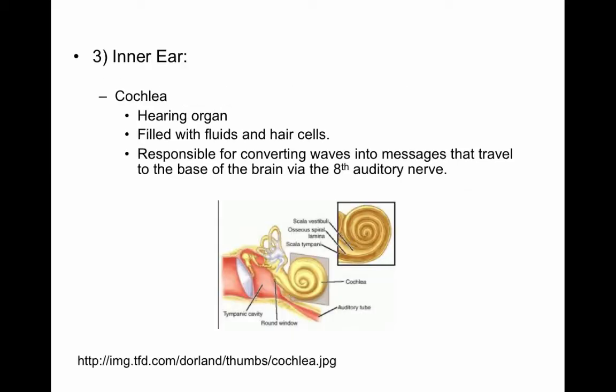The cochlea is your hearing organ. It is filled with fluids and hair cells — they're not real hair cells, but projections that are very important for measuring sound. The cochlea is responsible for converting waves into messages that travel to the base of the brain by way of the eighth auditory nerve.